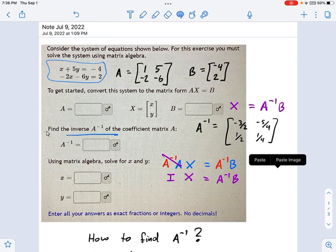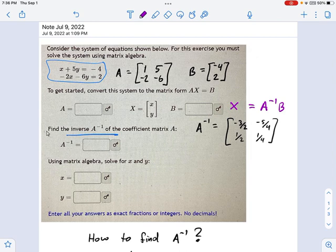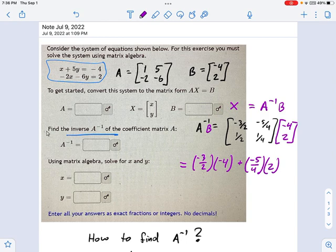So the inverse matrix is this guy, and I'm going to multiply it by B, which is negative 4, 2. So go ahead and do that multiplication out. This is A inverse times B. And what we get there is, now we've got to work through this carefully, negative 3 halves times negative 4 plus negative 5 fourths times 2. And that's just the top row.